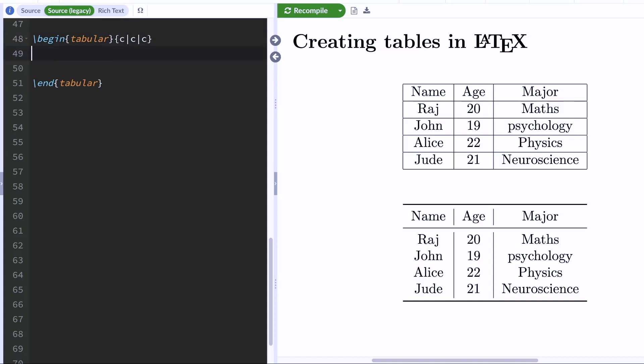And now you can actually start filling in the data. So I'm going to type name, age, and major. And to distinguish between these columns, you're going to have to use the ampersand symbol. This ampersand symbol tells LaTeX that name, age, and major all go in different columns. Now, to switch rows, you're going to type double backslash, and you can start filling in all your data.